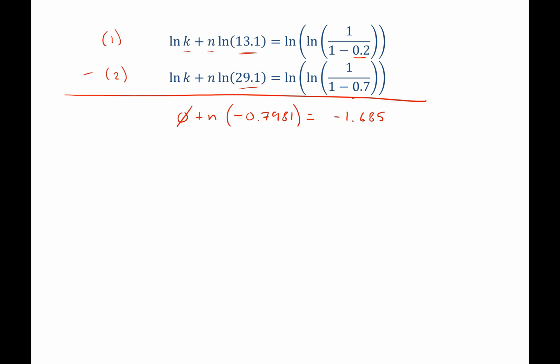Now we can go ahead and solve for n by dividing both sides by this, which makes this cancel out. Negative 0.79 n equals 2.1119.